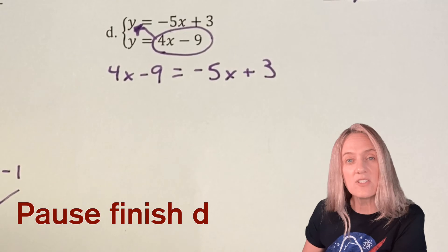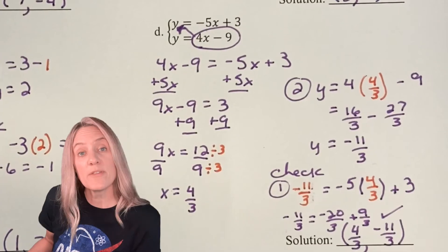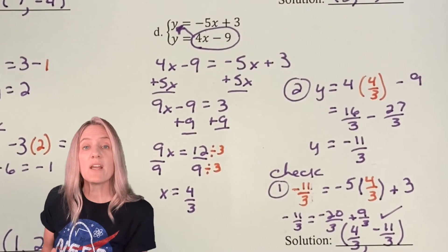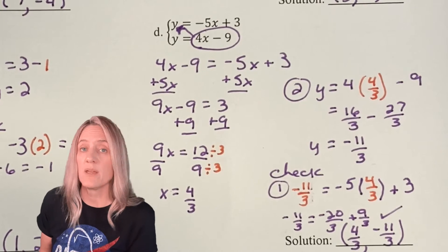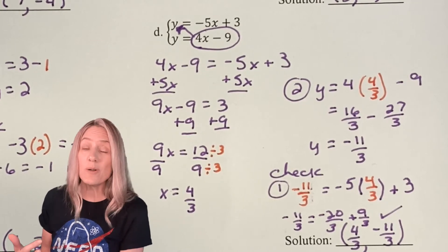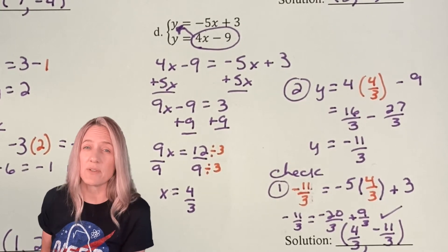Go ahead, finish it, check your solution in a moment. (4/3, -11/3). We should become accustomed to solutions not being perfect integers. In the real world, things don't always come out so nice and easy.